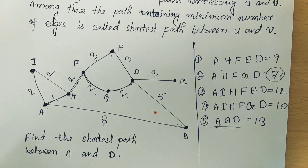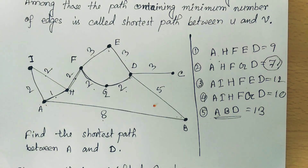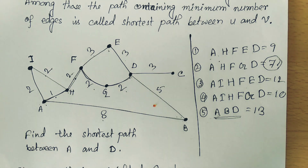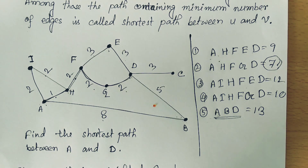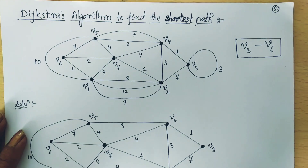Between two vertices there may be more than one path. If there are many paths, searching for the shortest among all of them is very tedious. So for that, we have an algorithm by which we can directly find the shortest path.